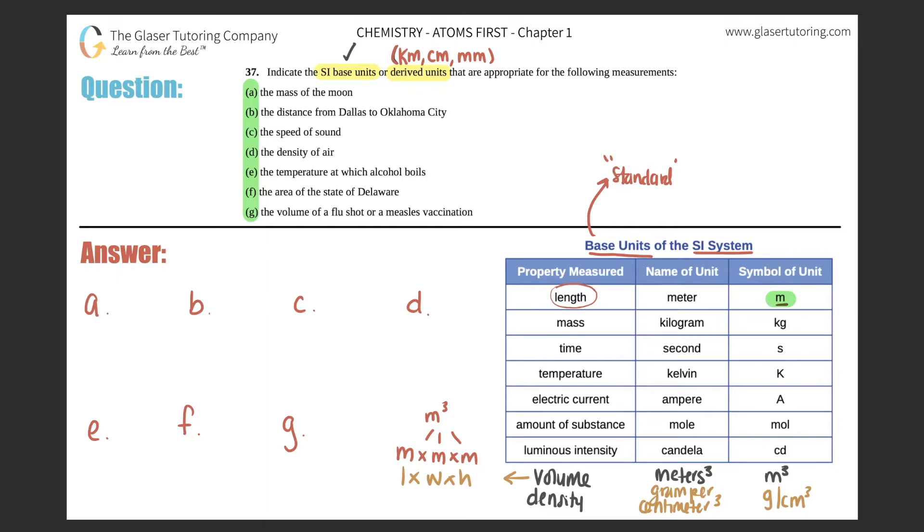So A, we want to find out the mass of the moon. Well, mass is represented in kilogram. That's a huge unit. So that's pretty respectable. So A would be kilogram.